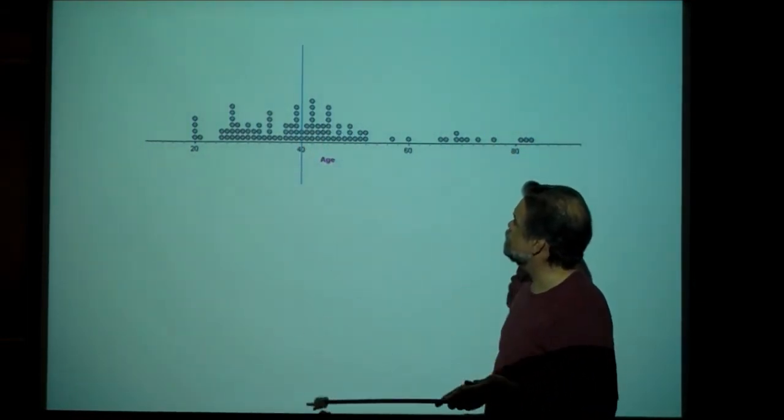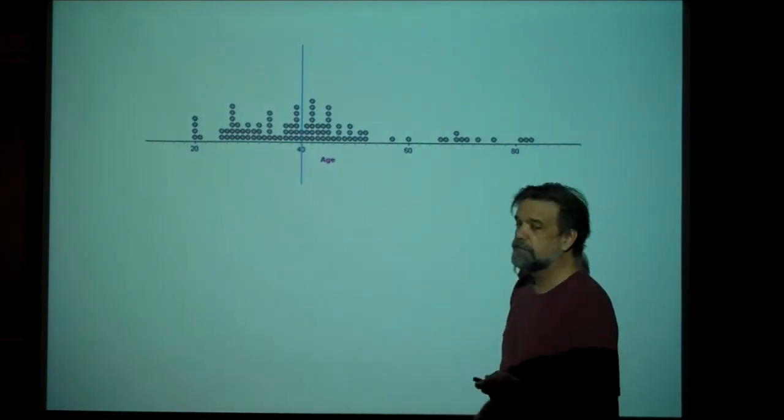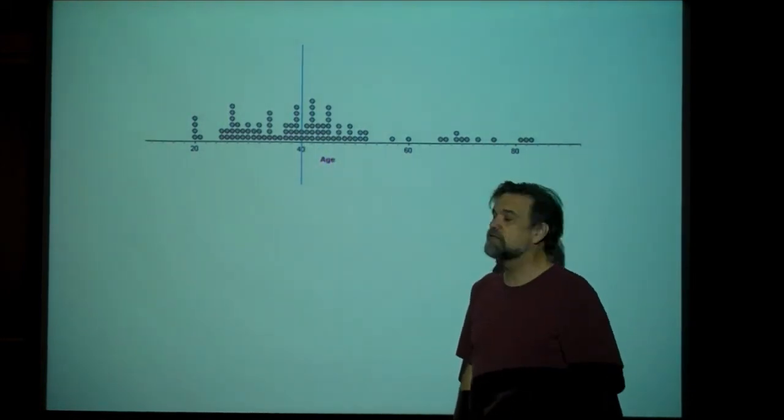If you have an even number, then you have two middle numbers and you take the average of those two. So when you look at the dot plot, basically, you just count in and you find the middle dot. So there's the middle dot right there, right on 40. So we say 40 is the center of our data. That's our median.